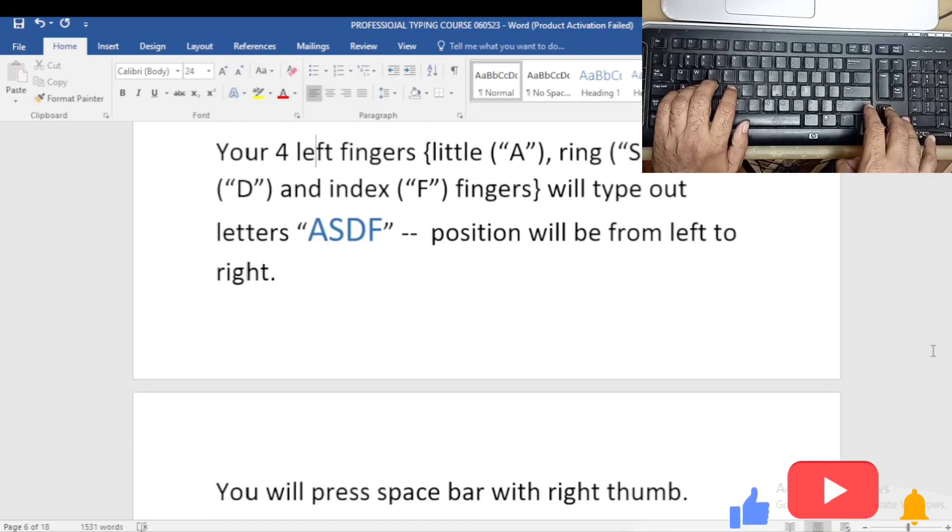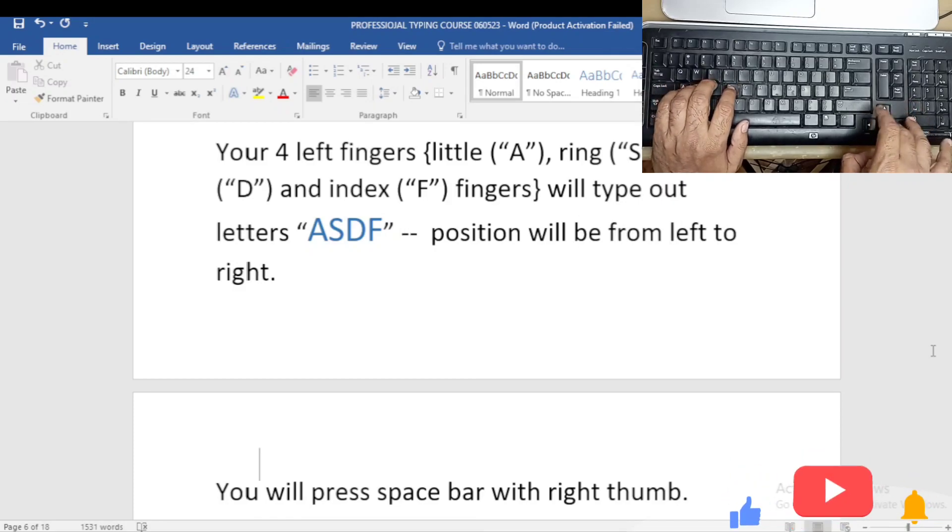Your four left fingers—little, ring, middle, and index—will type out letters A, S, D, F. Position will be from left to right.